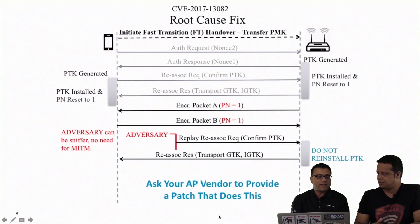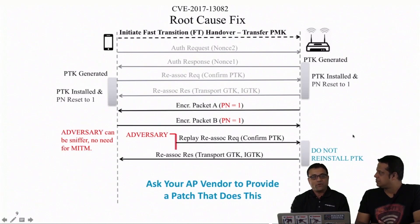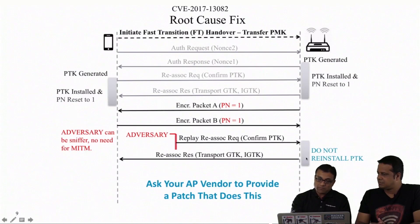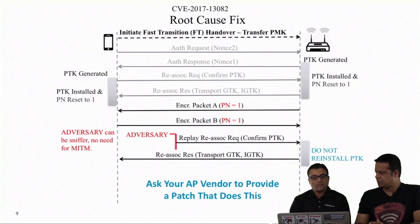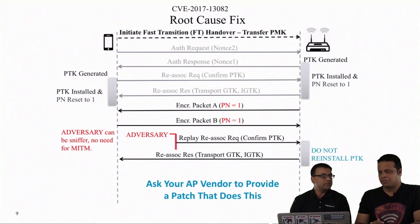Some access point implementations have variants where CPU logic operates independently of chip logic, so this fix may not always be possible. In that situation, the recommendation is to simply disconnect the client after receiving a duplicate re-association request — ensuring there is no security hole. There will likely be both types of mitigation patches available depending on different access point hardware and platform capabilities, but both can fully address the security issue. The key action is to patch your access points.